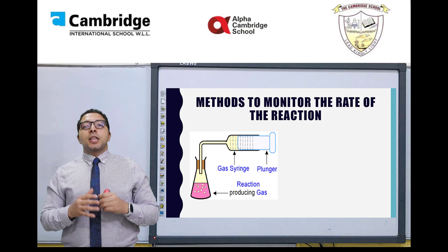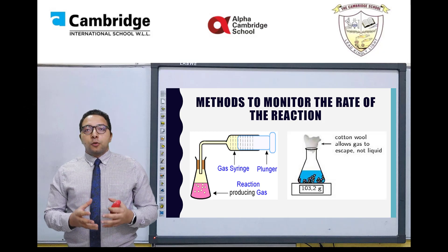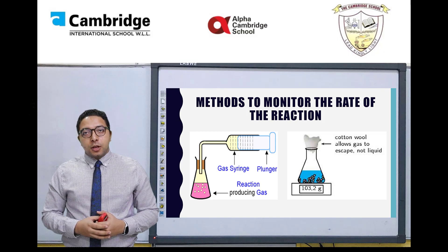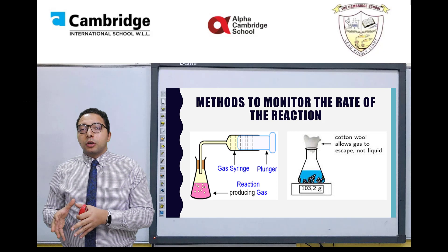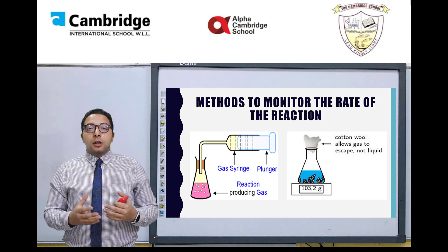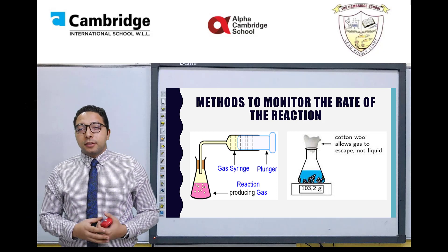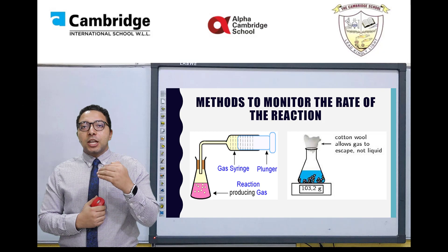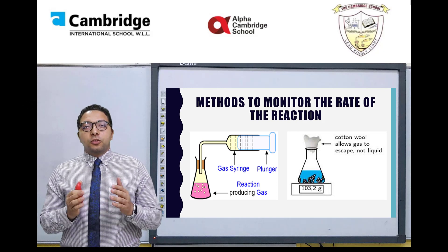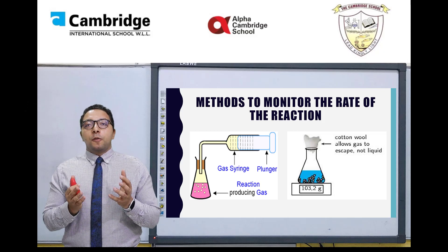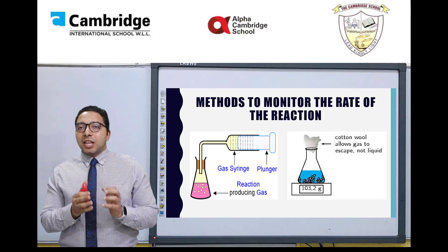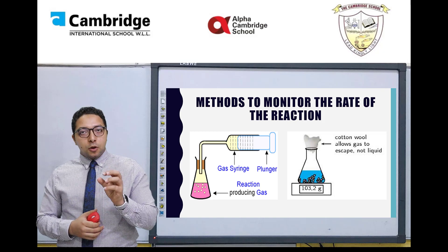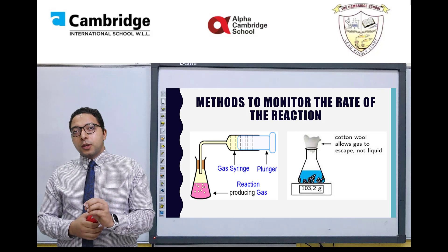The second way is by measuring the reduction in mass. If we start the reaction with 100 grams of reactant, we should end up with 100 grams of product based on the law of conservation of mass. However, in an open system, gas escapes from the conical flask, causing a reduction in the mass of the product. So we start the reaction on a balance to find the mass at the beginning, then measure the reduction in mass every minute to find out how many grams are lost over time.